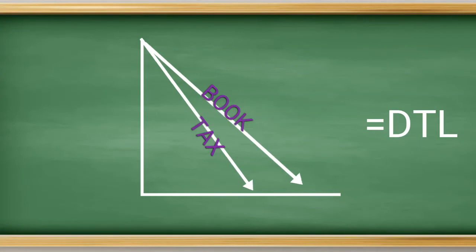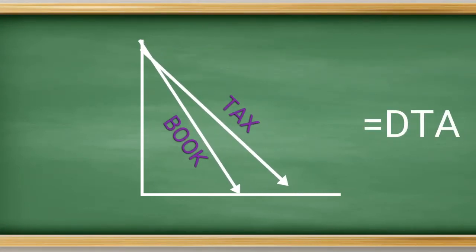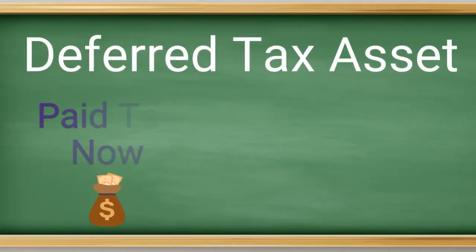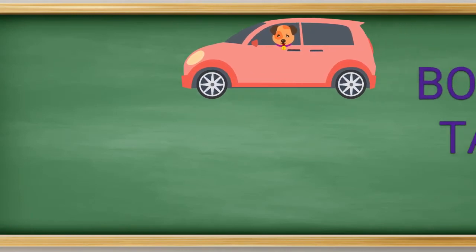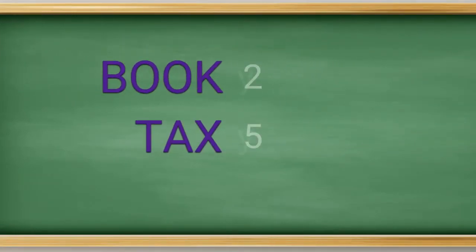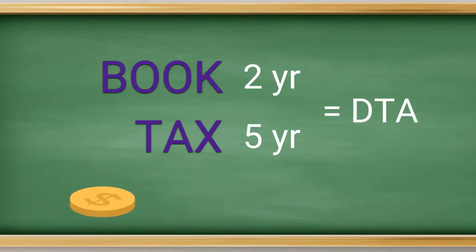Now, the other side of the coin is a deferred tax asset, or a DTA. This one works in the opposite, that you have paid taxes, but you will get a reduction in taxes in future years. Now, this could come about in our car depreciation example if our useful life was two years for book purposes. This would cause book depreciation to exceed tax depreciation, causing taxes to be paid now that we will get the benefit in future years. This causes a DTA.